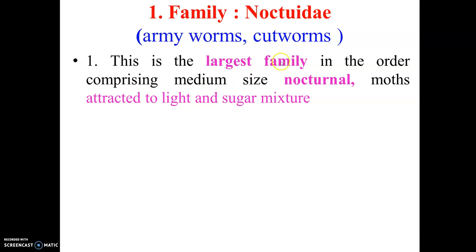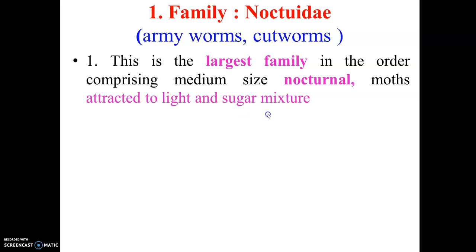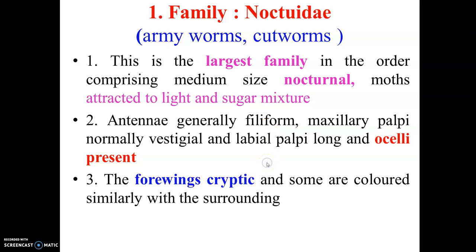Noctuidae is the largest family in the order, comprising nocturnal insects. These insects are attracted towards light and also towards a sugar mixture. Ocelli are present and antennae, if present, are fully formed. The four wings have cryptic coloration, meaning the four wings have different colorations within them.